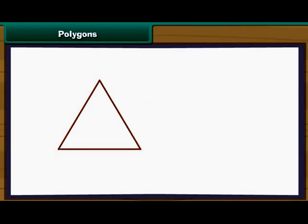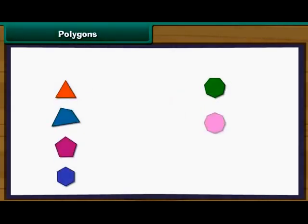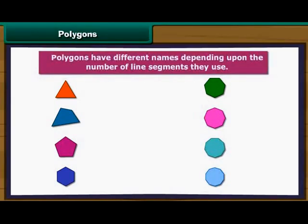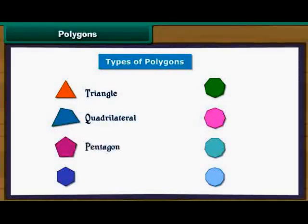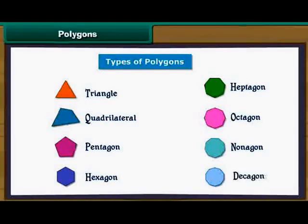Polygons: We can form different shapes by enclosing them with line segments on all sides. Such closed figures are known as polygons. Polygons have different names depending upon the number of line segments they use. Here we look at the following types of polygons: triangle, quadrilateral, pentagon, hexagon, heptagon, octagon, nonagon, and decagon. Now we will learn more about each polygon one by one in detail.